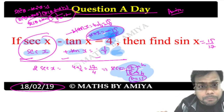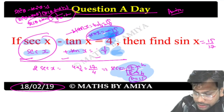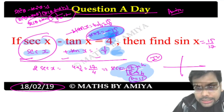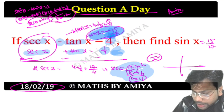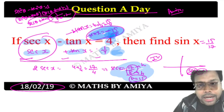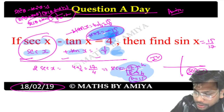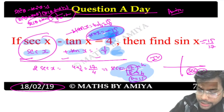Sec positive and tan negative means this is the 4th quadrant, which is the place where sec and cos are positive and tan is negative. Since this lies in the 4th quadrant, the answer is -15/17.